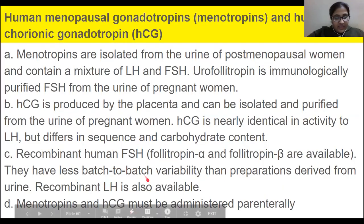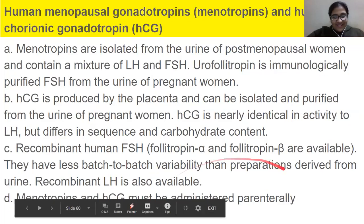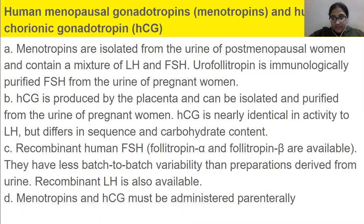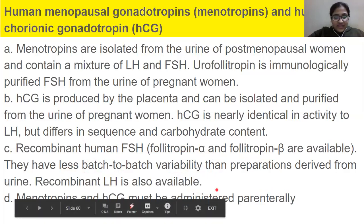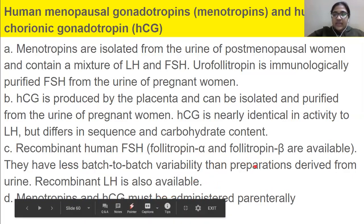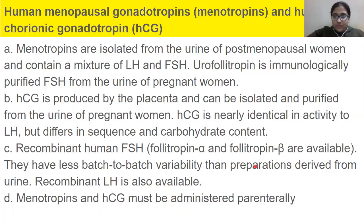Recombinant human FSH and LH are available and have less batch variability than preparations derived from urine. Recombinant LH is also available. Menotropin and HCG must be administered parenterally. Ladies who are having trouble conceiving actually receive these injections of menotropin and HCG.